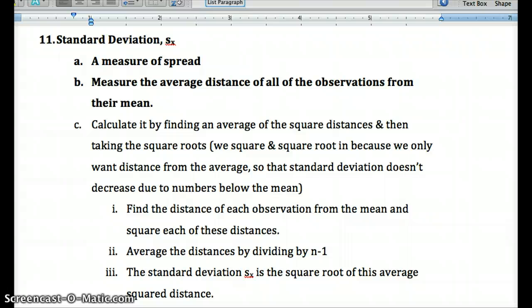Squaring those, adding them up, dividing by the number of observations minus 1, and then taking the square root of that. So we do all of those things in order to figure out on average how much further something is above or below the mean.